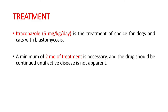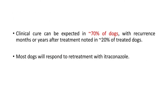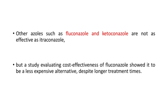Coming to treatment - itraconazole 5 mg/kg/day is the treatment of choice for dogs and cats with blastomycosis. A minimum of two months of treatment is necessary and the drug should be continued until active disease is not apparent. Clinical cure can be expected in approximately 70% of dogs, with recurrence months or years after treatment noted in almost 20% of treated dogs - most of whom will respond to retreatment with itraconazole. Other azoles such as fluconazole or ketoconazole are not as effective as itraconazole, but fluconazole has been shown to be a less expensive alternative despite longer treatment times.